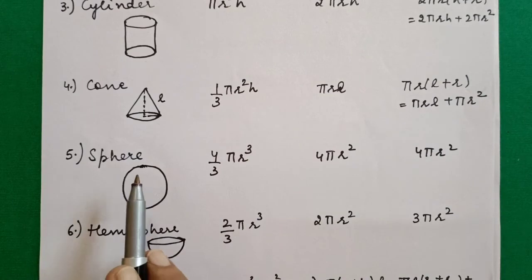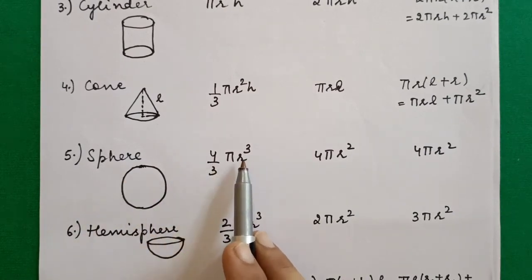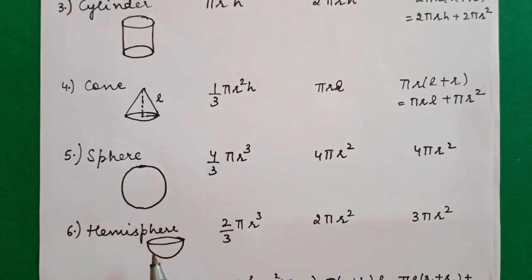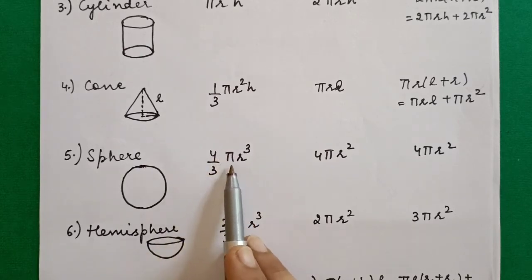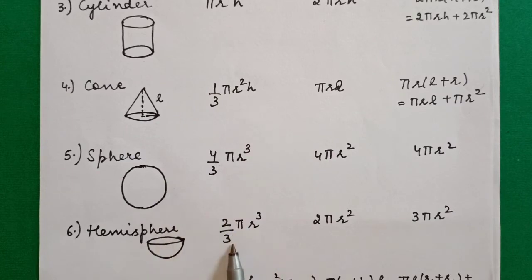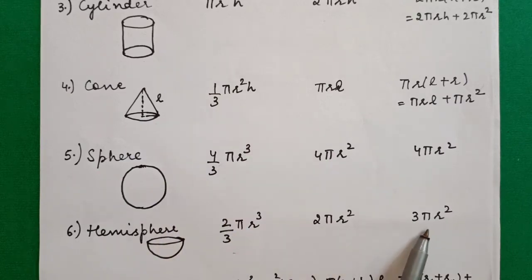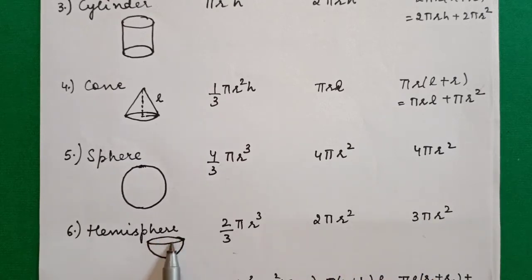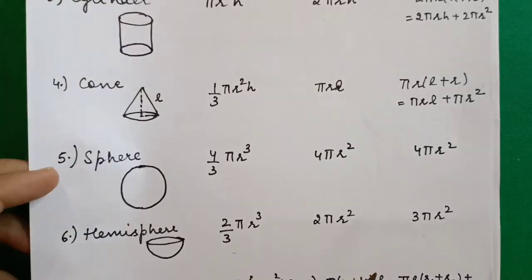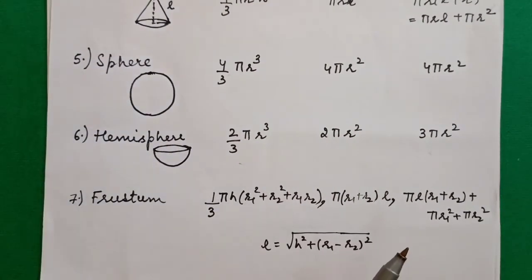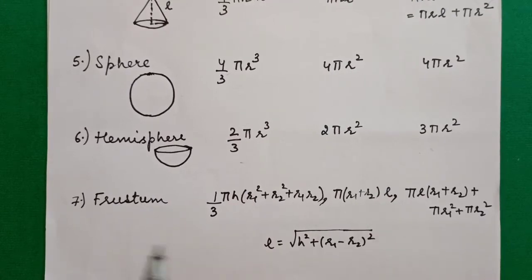The volume of a sphere is (4/3)πr³. When we cut it in half we get a hemisphere, so its volume is (1/2) of that. For the hemisphere's total surface area, take half the sphere's surface area and add the bottom circle's area. There are 7 formulas total — write them all on one page and learn them.